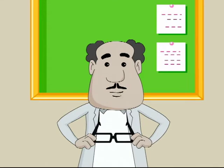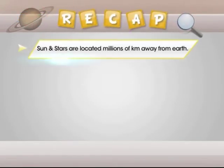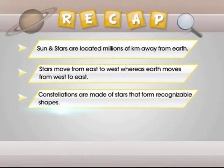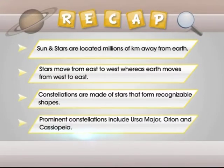Alright, Binny, it's time to revise what we have learned today. Let's have a quick recap. In this module, we learned that sun and stars are located millions of kilometers away from the Earth. Stars move from east to west, whereas Earth moves from west to east. Constellations are made of stars that form recognizable shapes. Prominent constellations include Ursa Major, Orion and Cassiopeia.